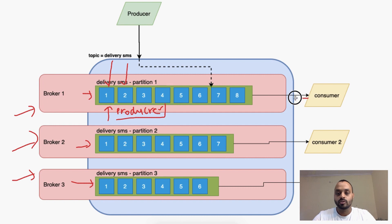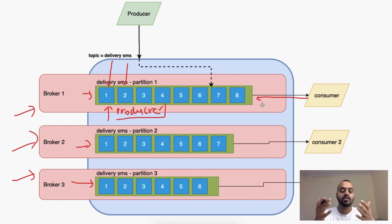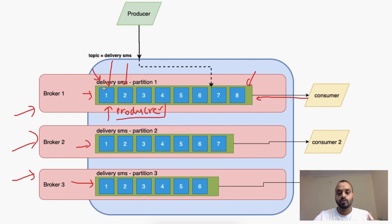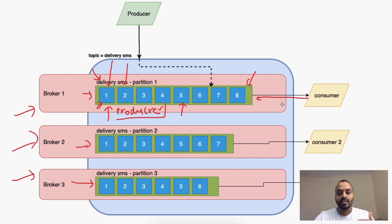So let's say one of our consumers joins a topic. From where does this consumer start reading the data — which offset? Basically, in the beginning it can read from the last produced offset, or it can start reading from the starting offset. That is a topic for a different video. Let's say our consumer started reading from offset 1 and has read up to offset 5.